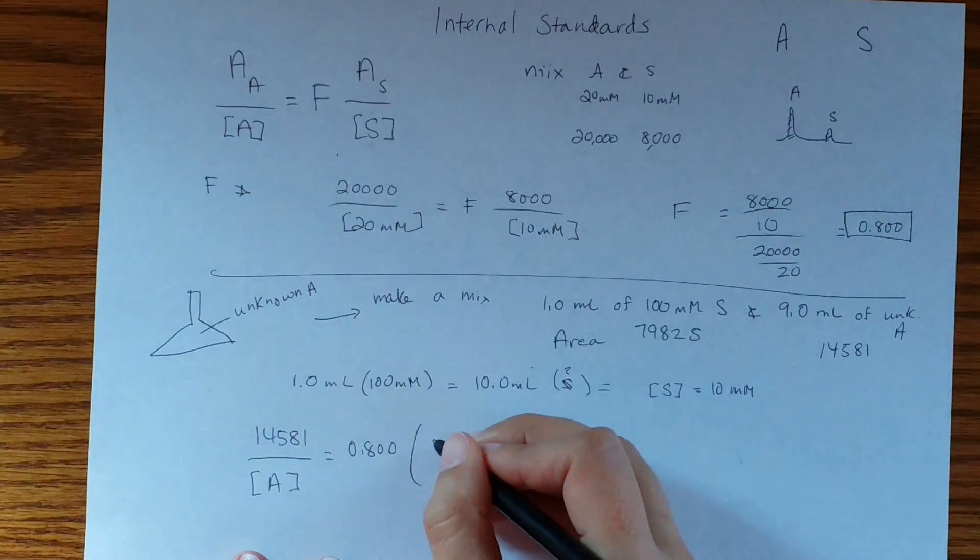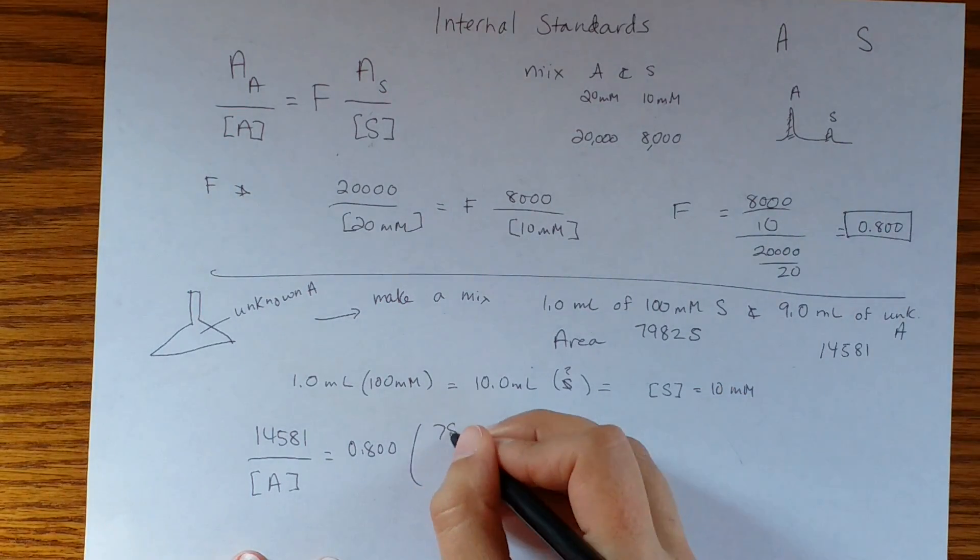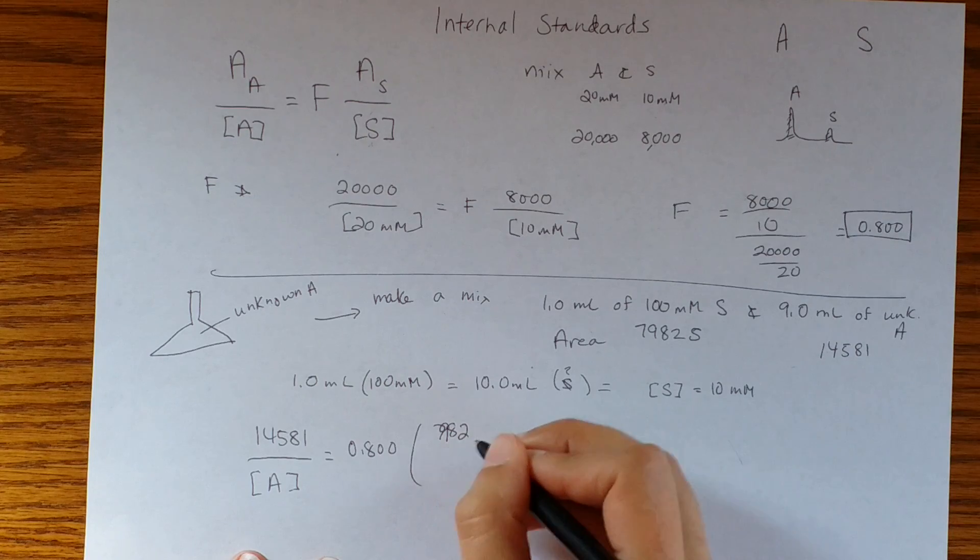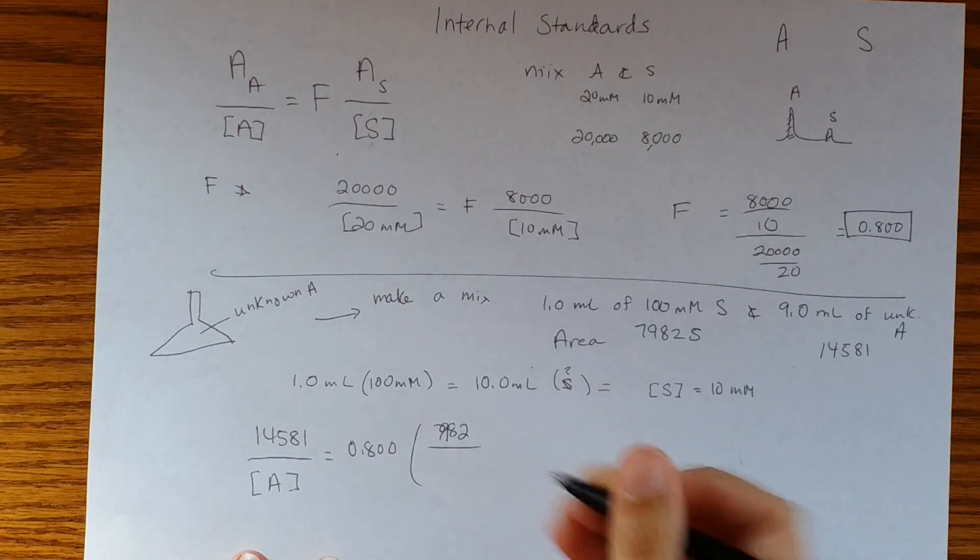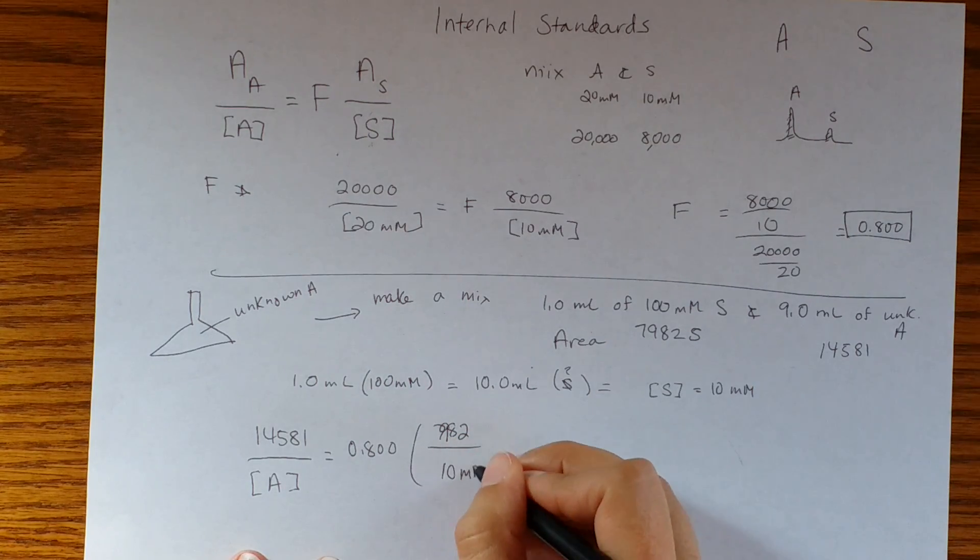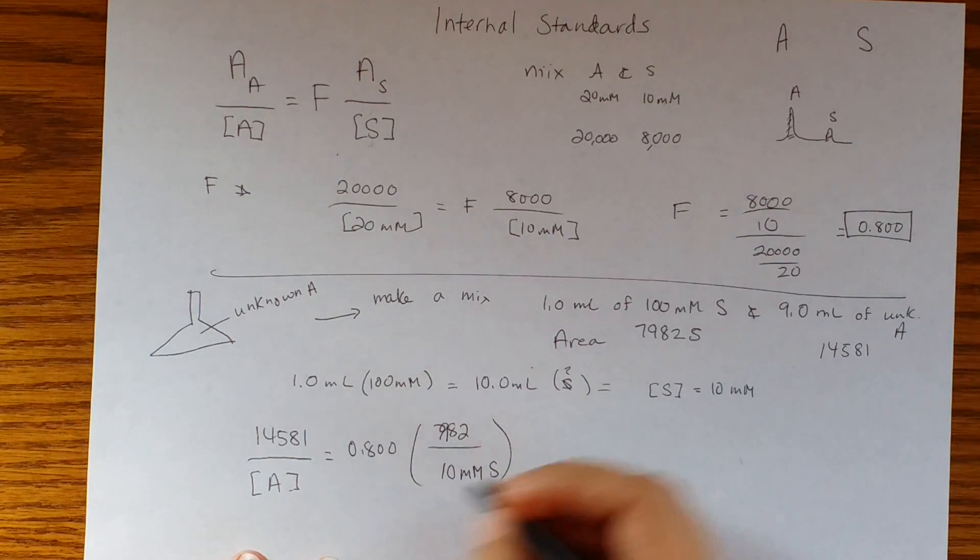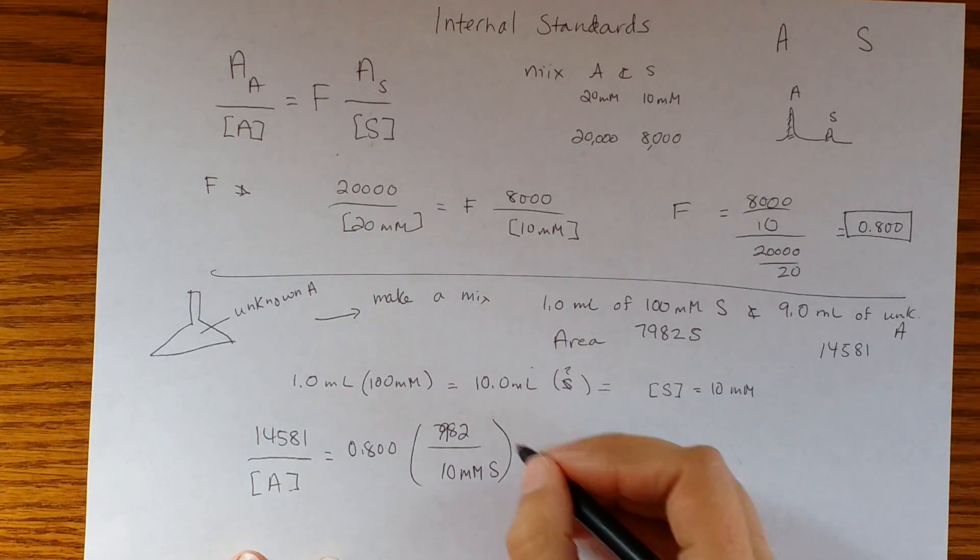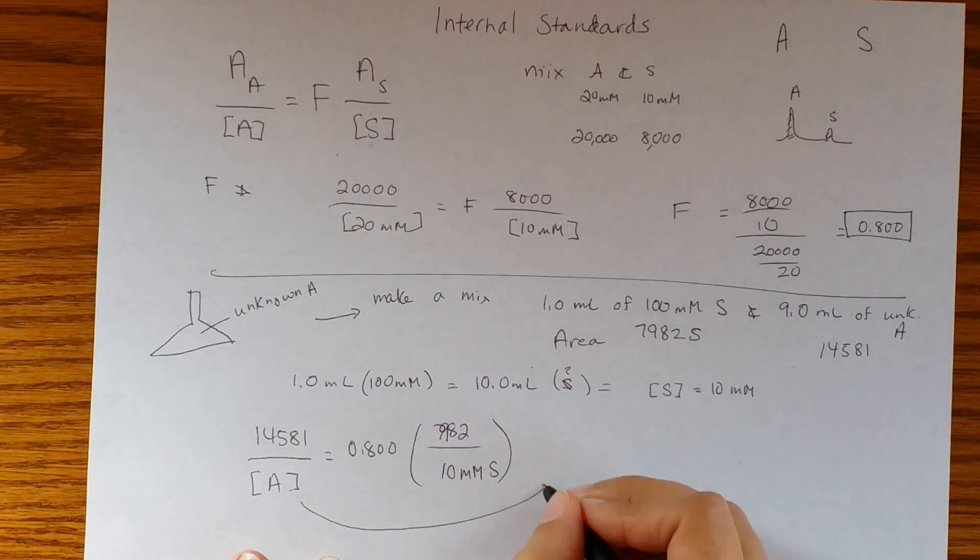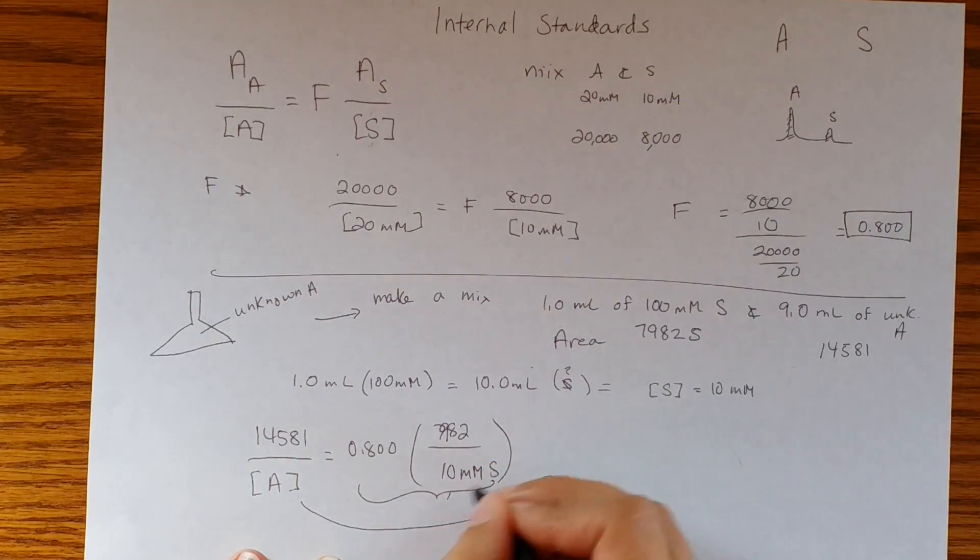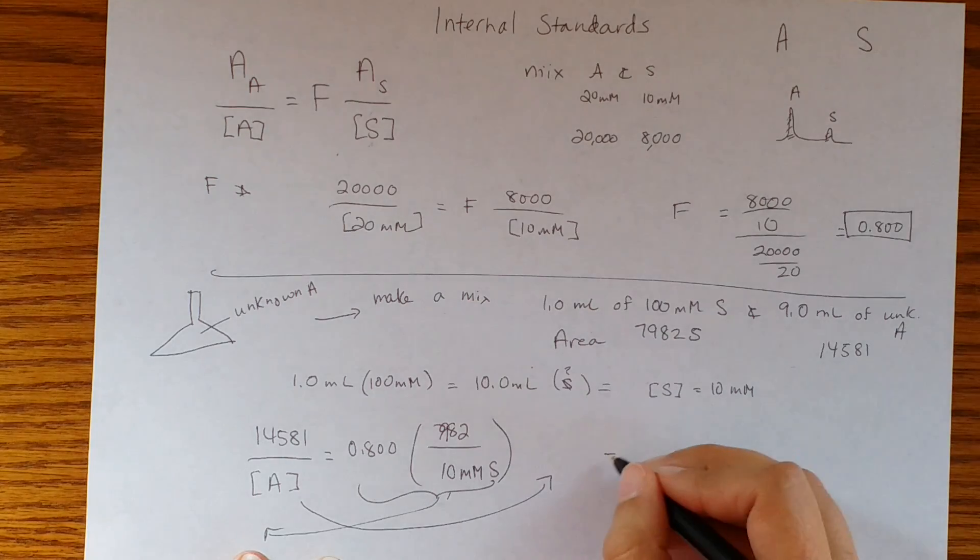And then we're multiplying that by the area of our standard, in this case 79.82, over a concentration of 10 millimolar for the standard. Okay, we need to solve this for A. So multiply everything by A, divide everything by this, so this ends up coming up here and this whole thing goes down there. And so we get A.